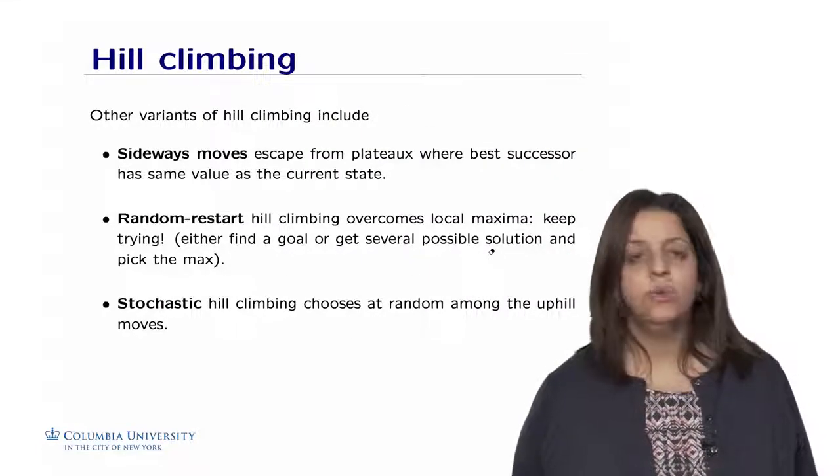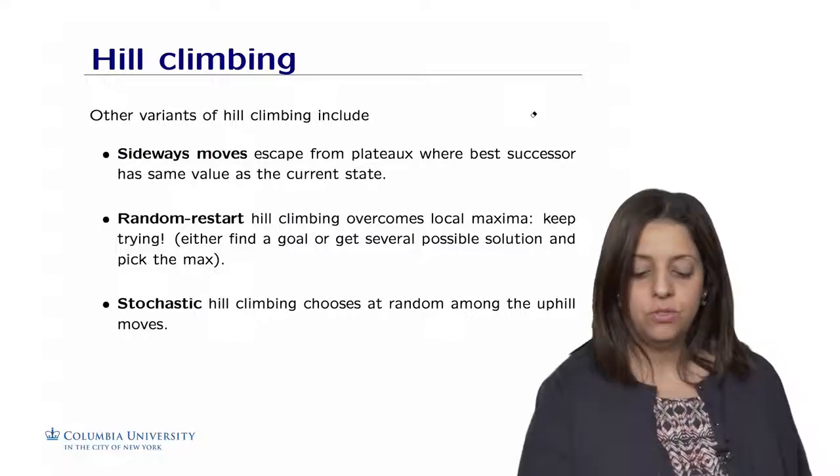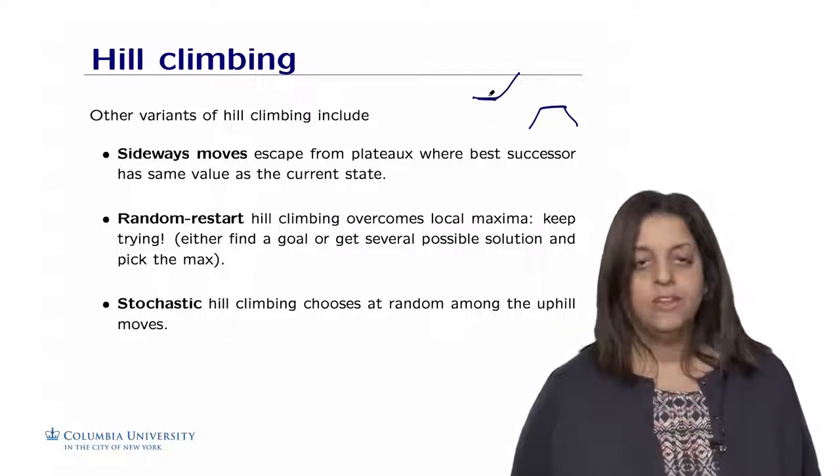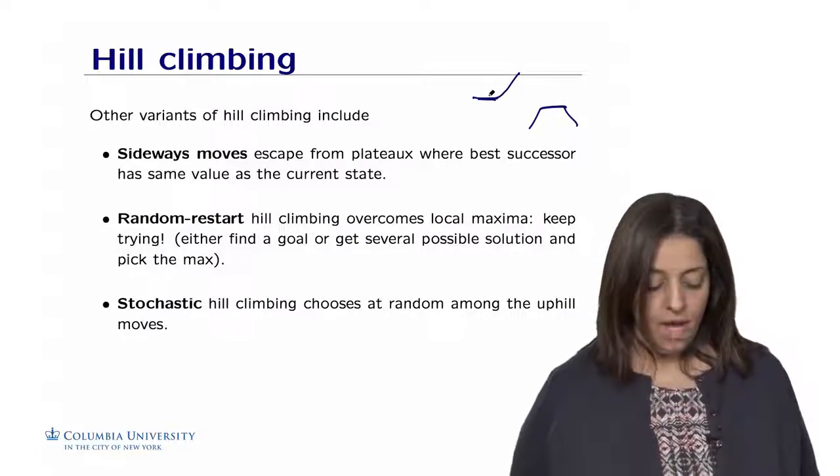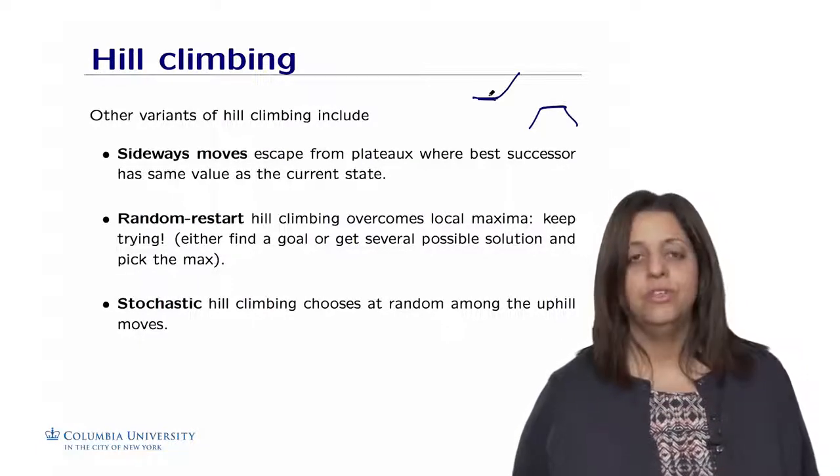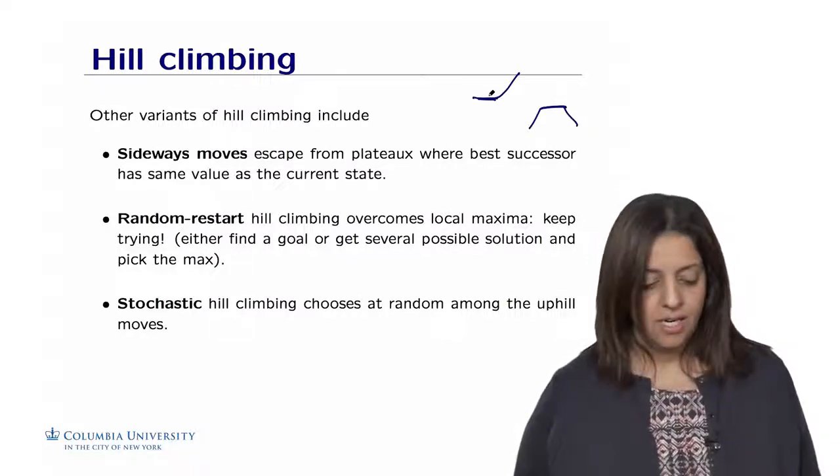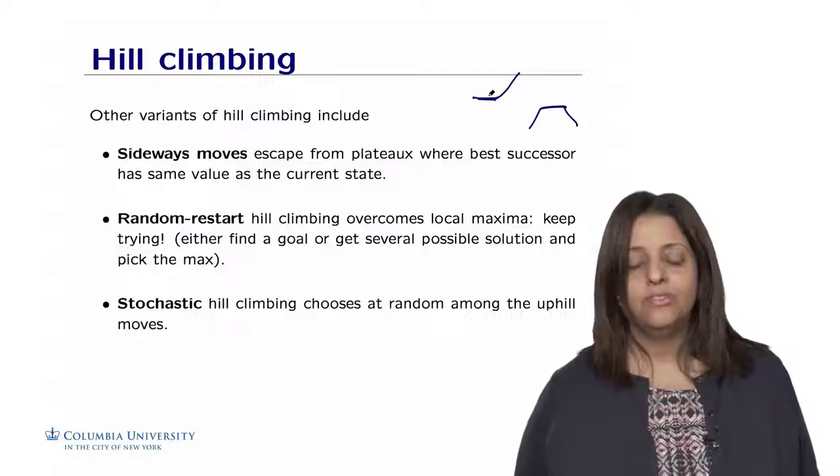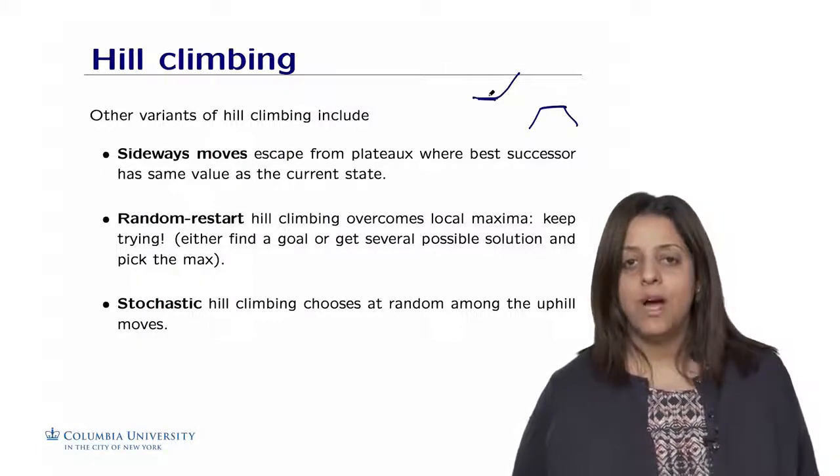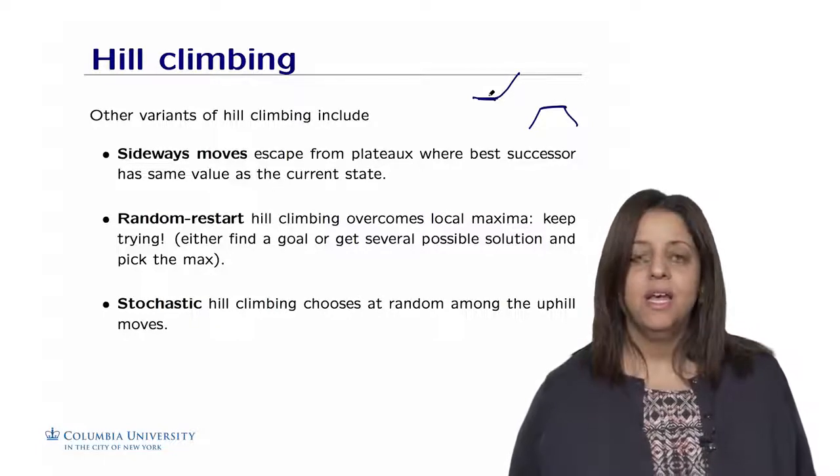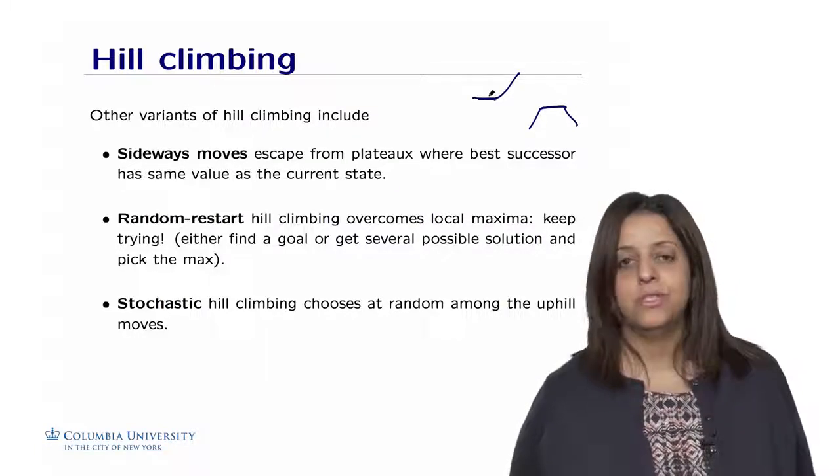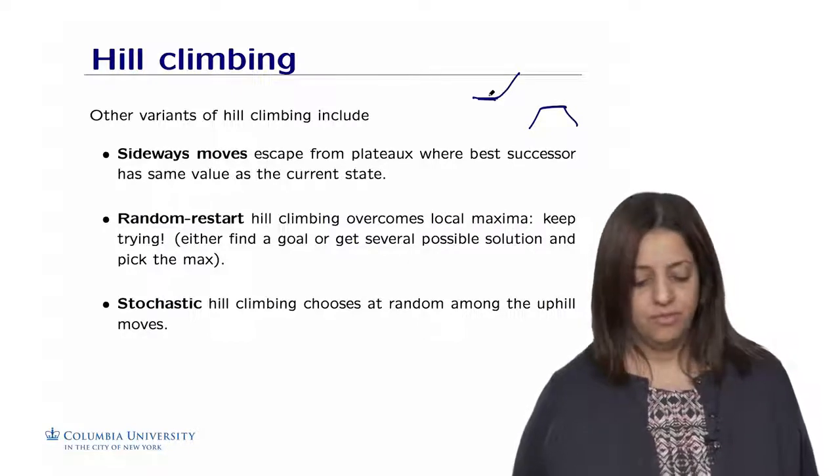Hill climbing algorithms have several variants. This includes sideways moves in which you want to escape a plateau such as this local maxima or this shoulder. The idea is to, if we move sideways, then there is a hope that we're going to escape from this flat area and reach a shoulder. We can put a limit on the number of sideways moves to avoid infinite loops. Another variant is called random restart in which we do hill climbing several times to overcome local maxima. This means keep trying until you get a better solution. So if the problem requires to find the goal, then we could do that several times until we find the goal. And if the problem is to optimize some objective function, we could do the local search several times until we reach the maximum value for this function.